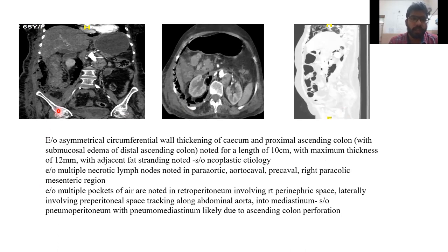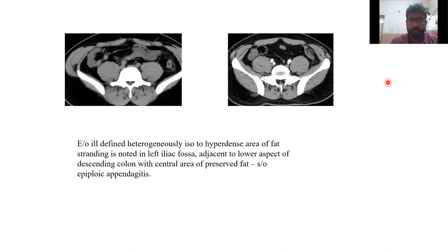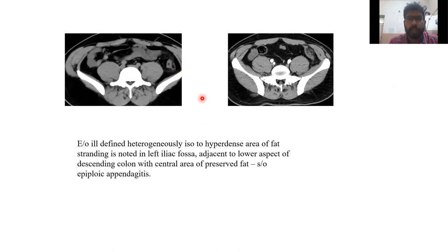In this case, we can see asymmetrical circumferential thickening of the cecum and ascending colon with dilated small bowel loops and multiple enlarged lymph nodes. We also see multiple air pockets in the retroperitoneum with extension suggesting pneumoperitoneum and pneumomediastinum, likely secondary to ascending colon perforation. In another case, we see a well-defined heterogeneously iso-to-hyperdense area with fat stranding and enlarged left-sided deposits adjacent to the lower aspect of the descending colon with central area of preserved fat, consistent with epiploic appendagitis.